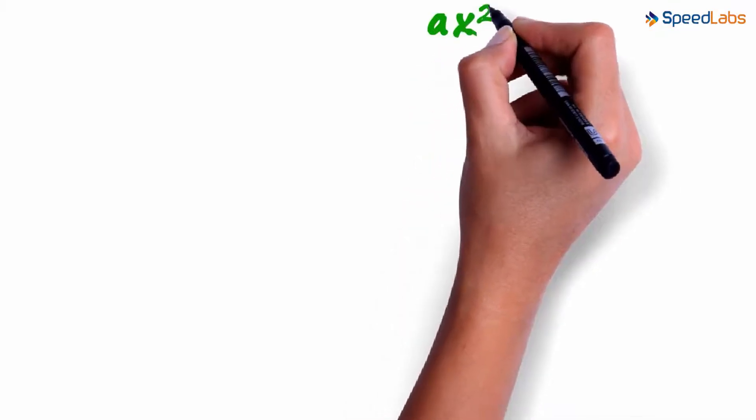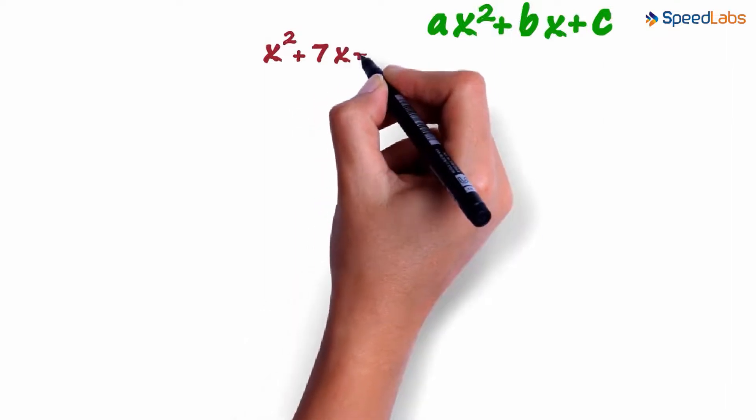The general form of quadratic polynomial is ax squared plus bx plus c. Let's try to factorize x squared plus 7x plus 12.